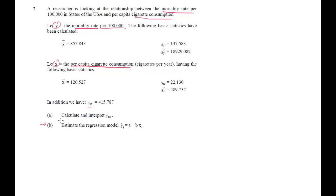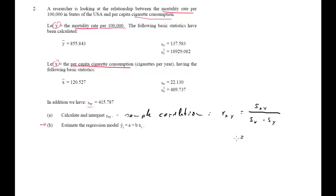Part a: calculate and interpret r_xy — the sample correlation. We calculate that as the covariance between x and y, short form s_xy, divided by s_x times s_y. What we have is 415.787 divided by the product of the two standard deviations: s_x was 22.13 times 137.583. When you calculate this, your result is going to be 0.137.